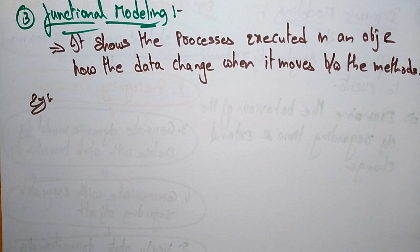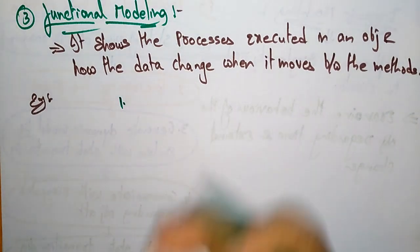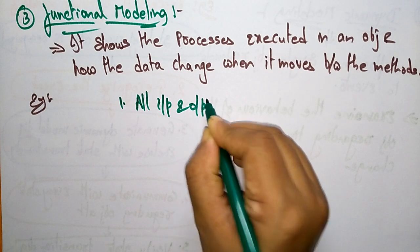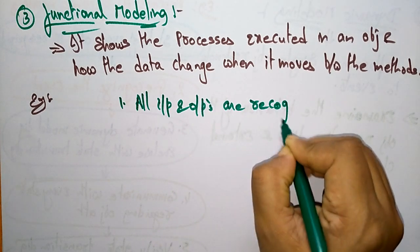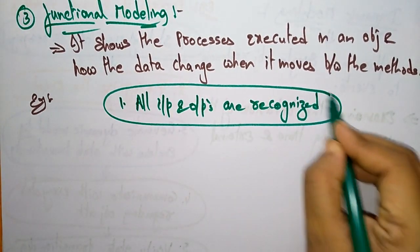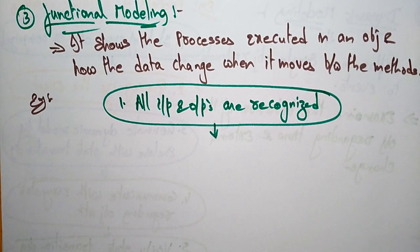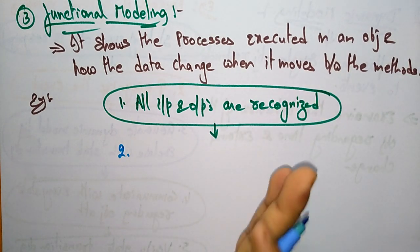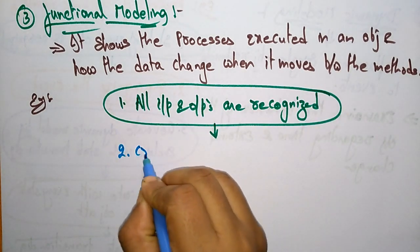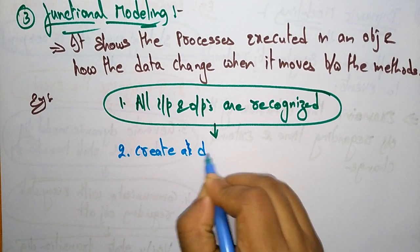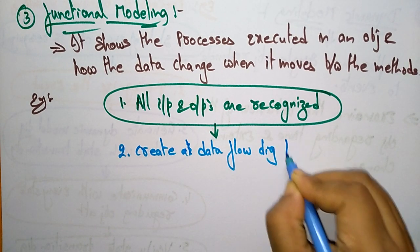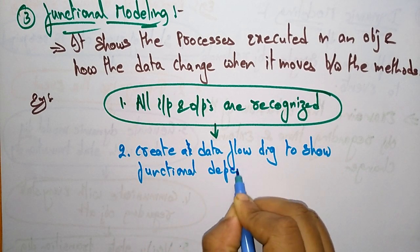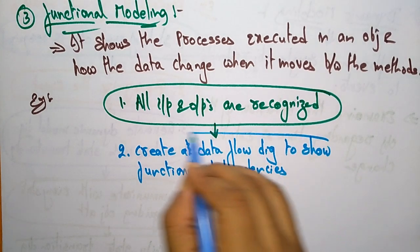Let me explain the process of functional modeling. The first step is that all inputs and outputs are to be recognized. With the help of requirements, you first recognize what the inputs and outputs are. The second step is to create a data flow diagram to show the functional dependencies between all the inputs.